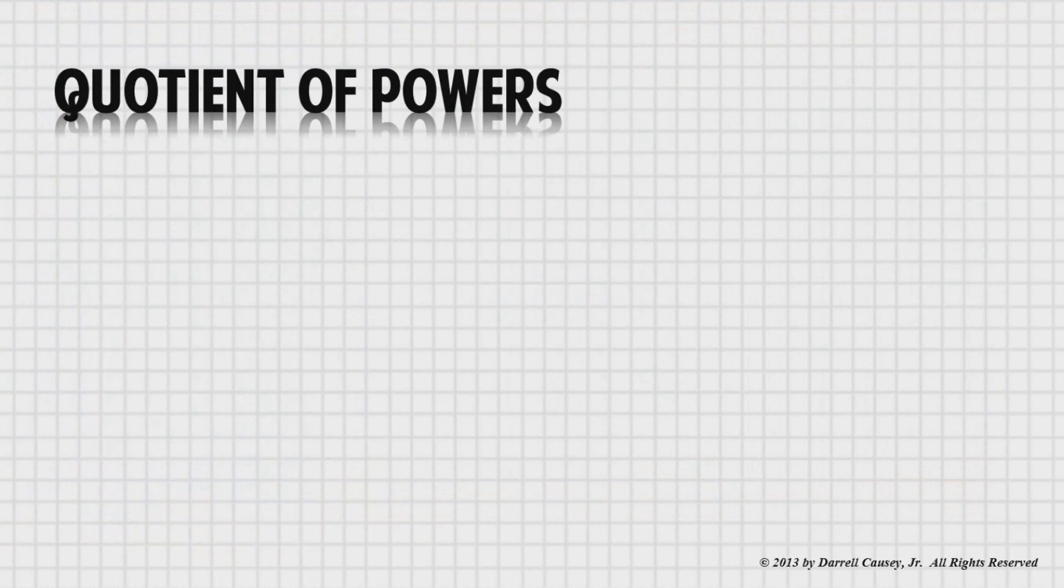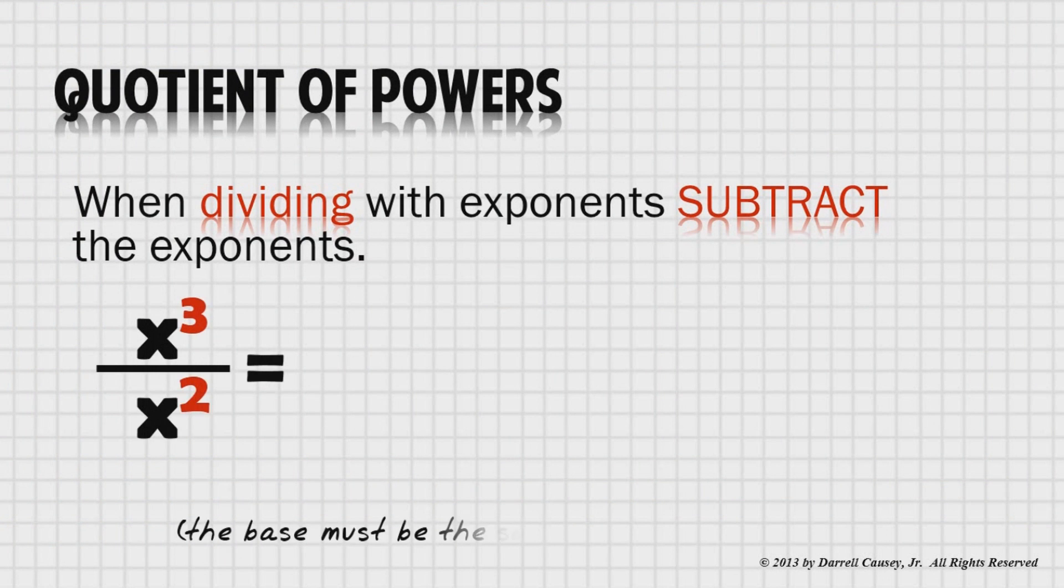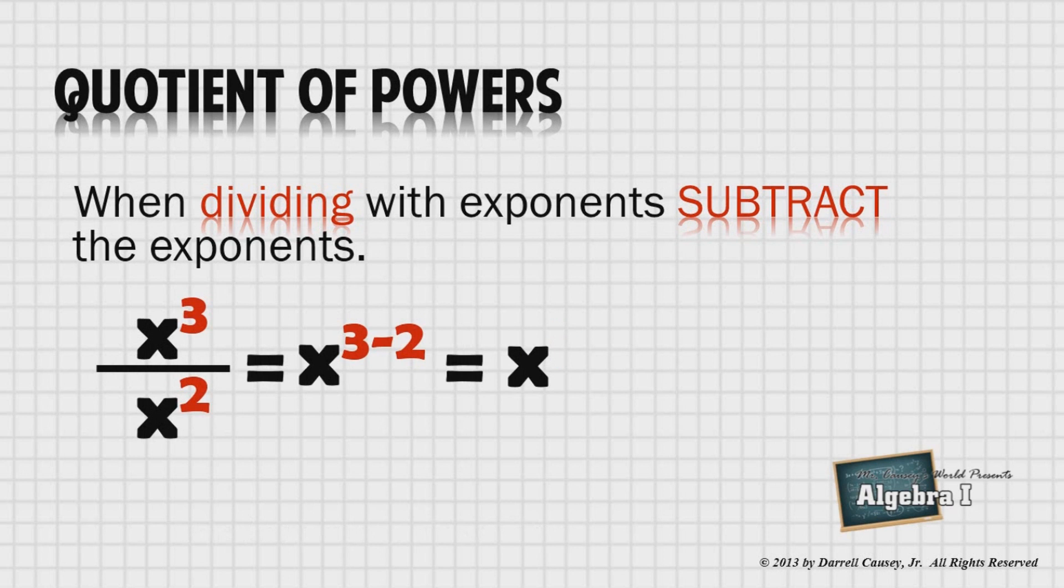Quotient of powers. When dividing with exponents, subtract the exponents. X cubed divided by x squared is the same as x to the third minus 2, which is x to the 1, which of course is x because we don't write 1's, at least not when we're multiplying.